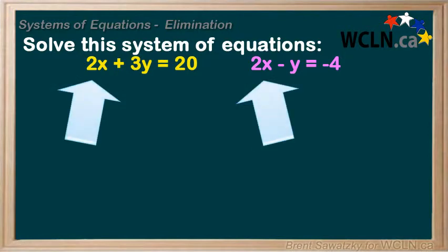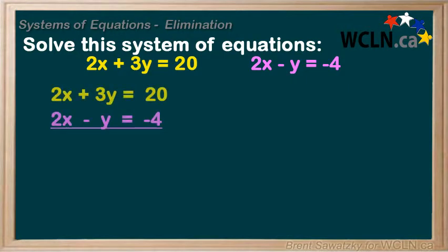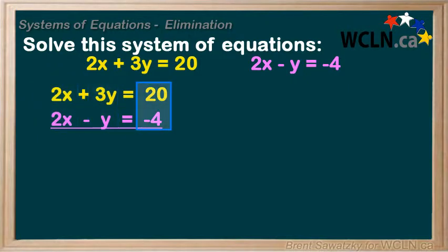Note that we have 2x in each equation, so we can use that fact to eliminate both of the 2x's. We line up all of the x's in one column, the y's in one column, and the constants in one column. We notice that if we subtract the second equation from the first, it would eliminate the x's. To subtract, we need to change the signs of all of the terms in the second equation, and this will make the two x's disappear.